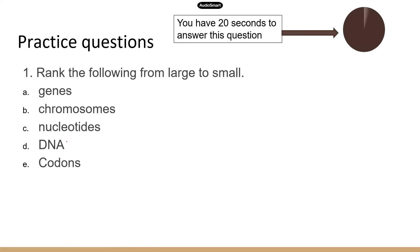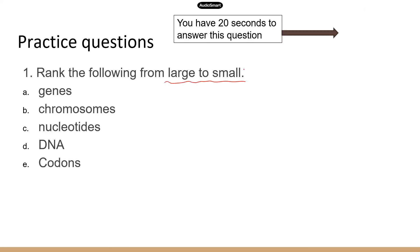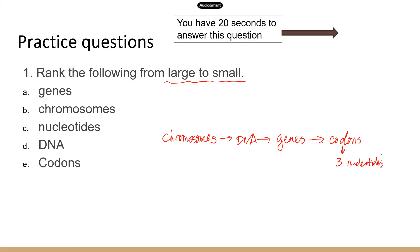Now let's look at the first practice question: rank the following from large to small. Make sure you arrange everything from large to small — it's a little tricky. The largest is chromosomes, then DNA, then genes. Genes have many codons, and each codon codes for an amino acid. Each codon has three nucleotides, so codons are bigger than nucleotides. That's the correct order.